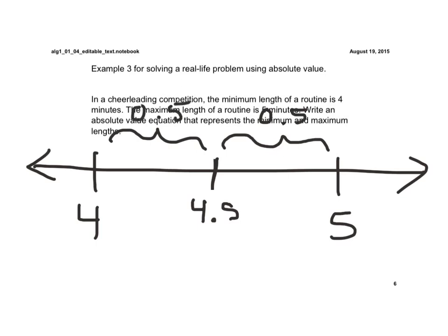Now we have all the information we need to write an absolute value equation. The target would be 4.5, so x minus 4.5 has to equal 0.5.